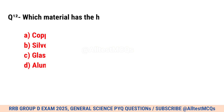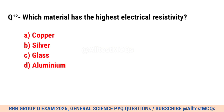Question No. 12. Which material has the highest electrical resistivity? Correct option is C. Glass.